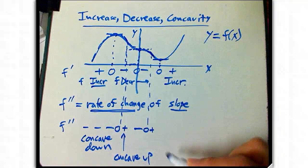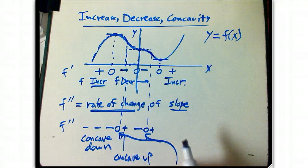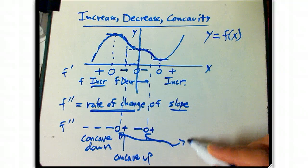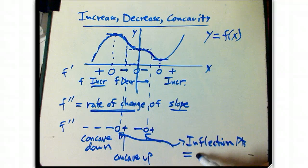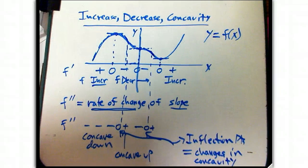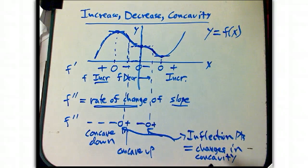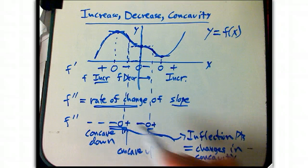These are called inflection points. Very important. They are not just zeros of the second derivative. They are changes in concavity. They are x values where we change concavity. And so it's either minus to plus or plus to minus.